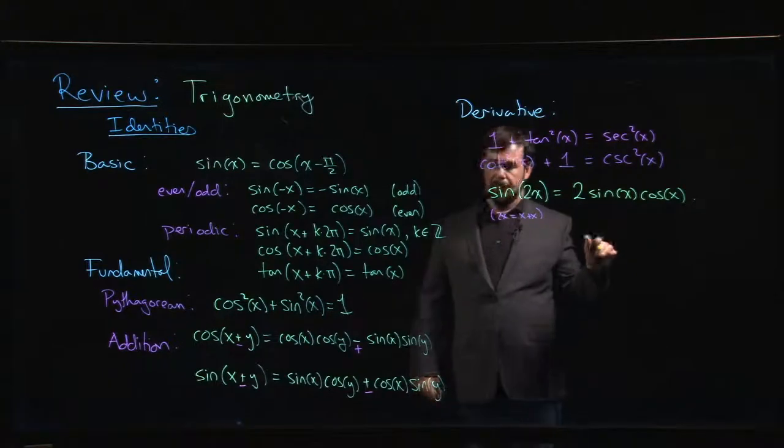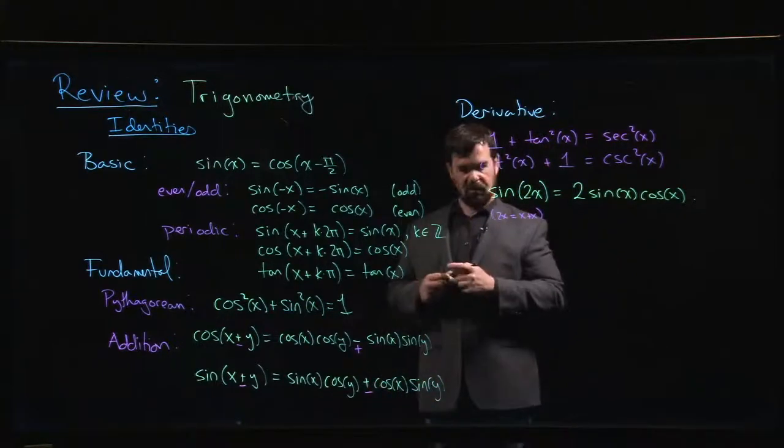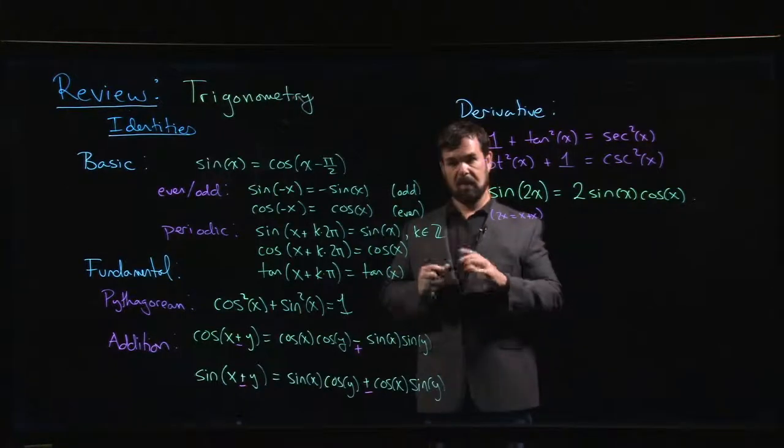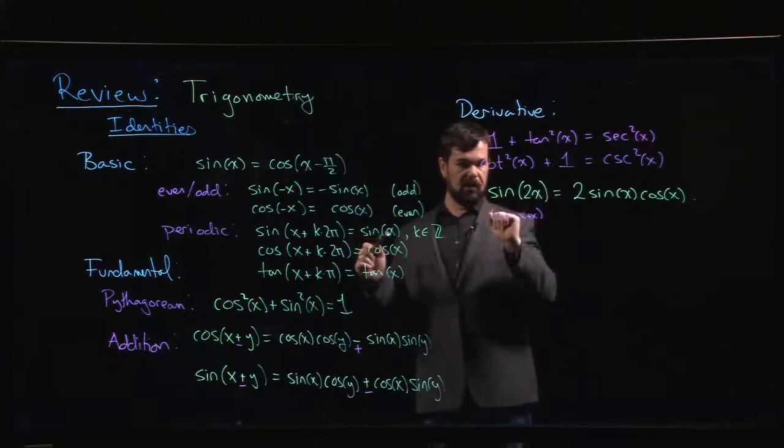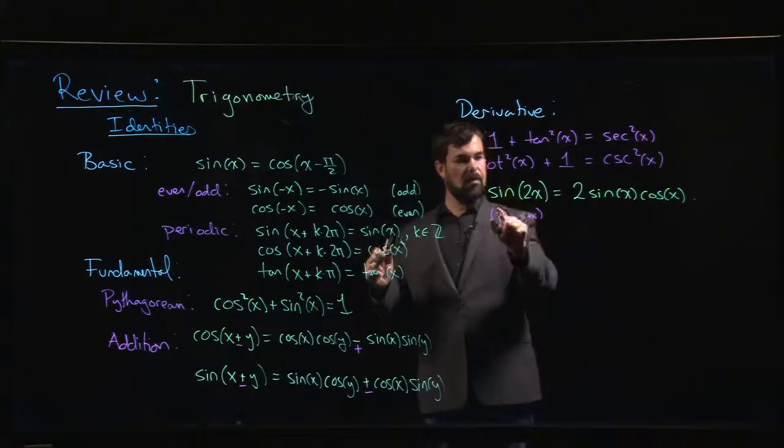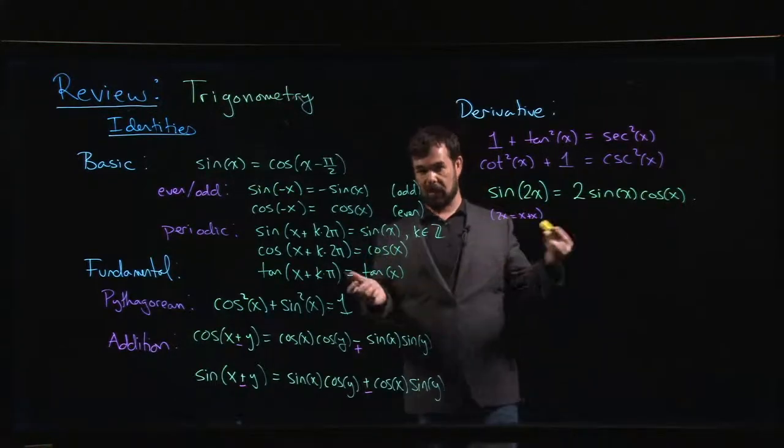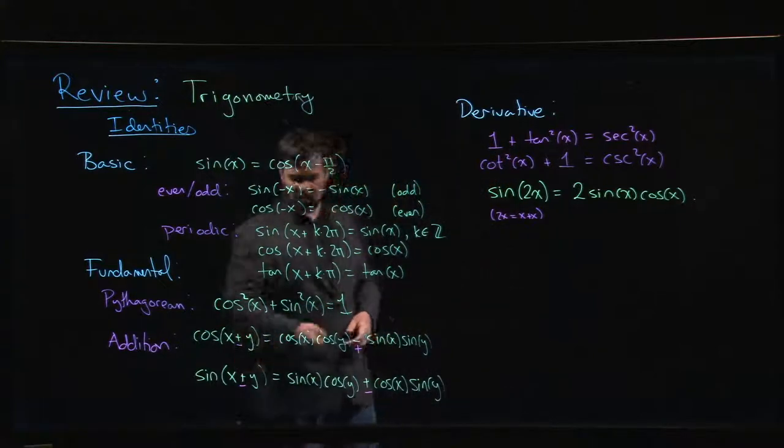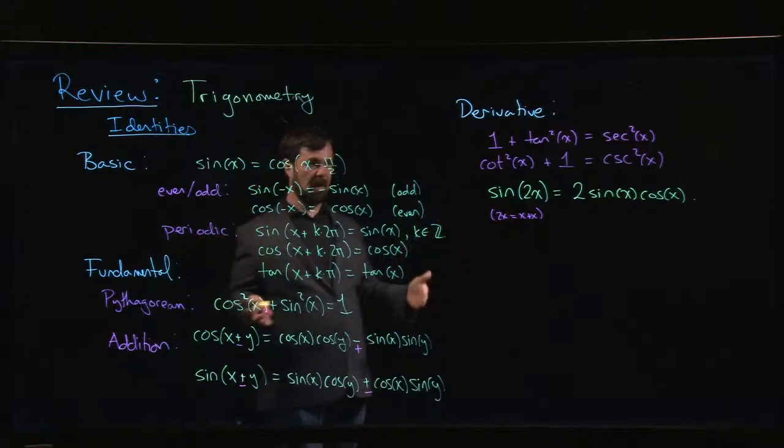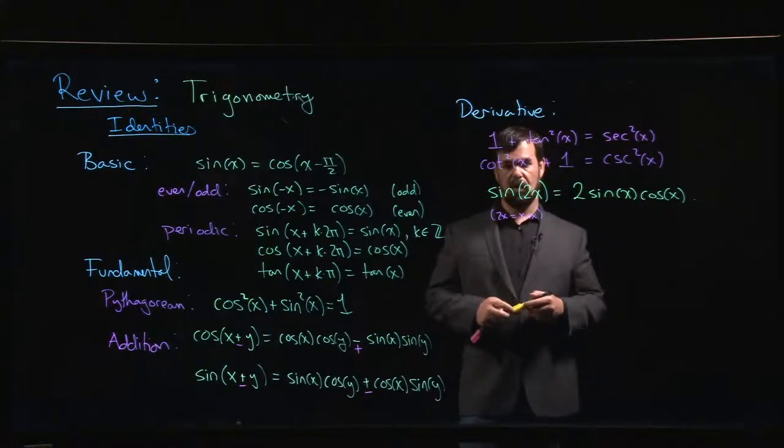And this identity is a good reminder that you can't just take that 2 and bring it out front. There's a lot of people that are always tempted to do that, especially once you get to things like limits involving trig functions. A lot of people want to bring that 2 out. The 2 doesn't come out. It's stuck inside the sine function. If you want to bring it out, you can, but it's going to cost you a cos x. And for other multiples, 3x, 4x, 5x, it gets a lot more complicated. You can keep using this addition formula repeatedly and keep expanding and get more and more complicated formulas. But generally, that turns out to not be all that worth your time.